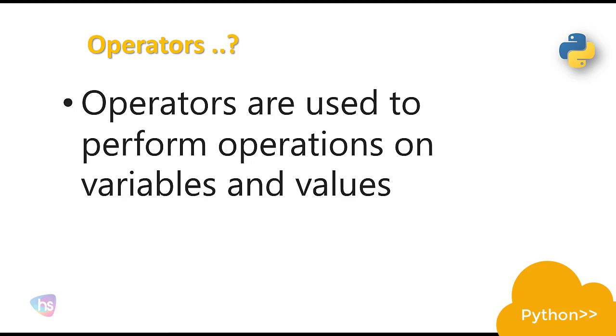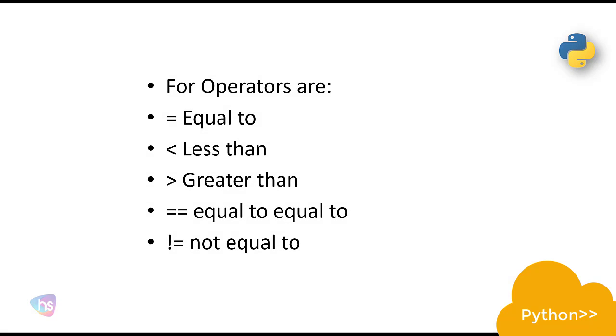So let's see here. The operators are: equal to, as we are using to assign some value to a variable we use this equal to operator. And less than, for comparing if the value is bigger or smaller, we'll use the less than operator. And greater than, this operator is for finding whether the value is lower or bigger.